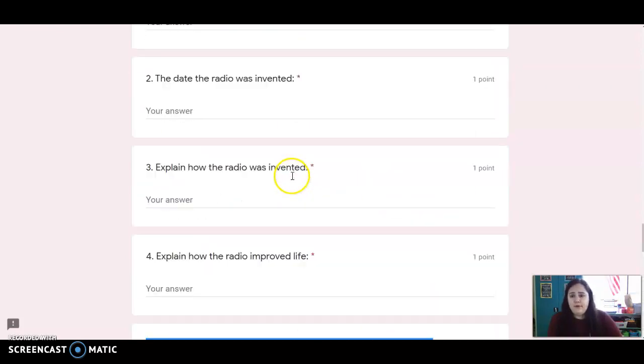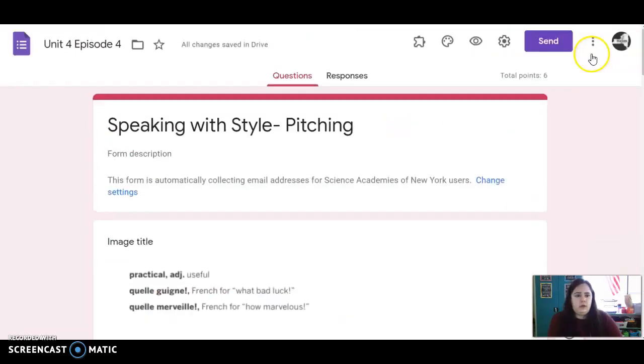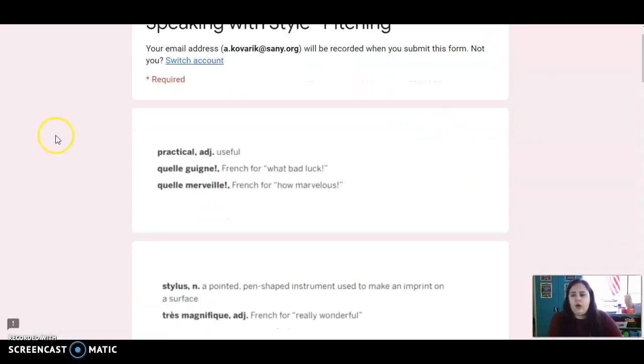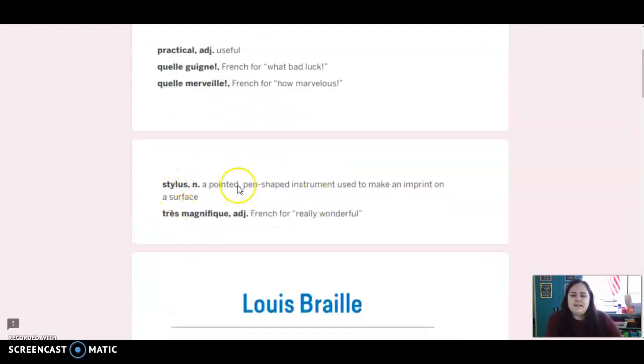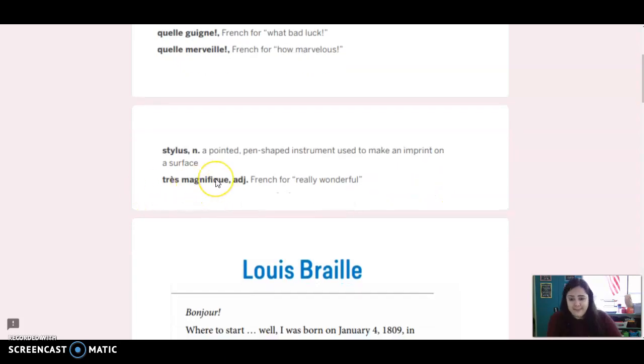Okay, that is it for reading. We're going to go over to skills. I've got a couple of vocab words. Practical is an adjective that means useful. I don't speak French, guys. Quel dommage is French for what bad luck. Quelle merveille is French for how marvelous. A stylus is a pointed pen-shaped instrument used to make an imprint on a surface, so like if you have a little stylus for an iPad, it's like a little writing utensil for touch screen. Très magnifique, I know that one. French for really wonderful.